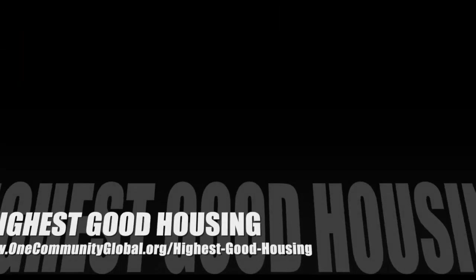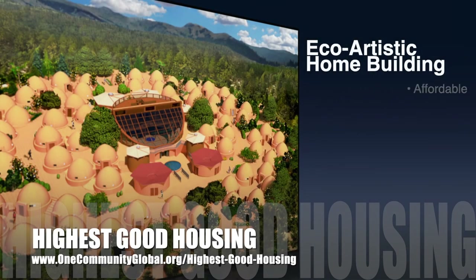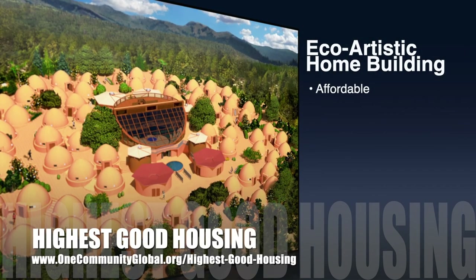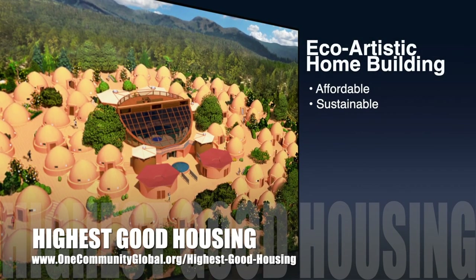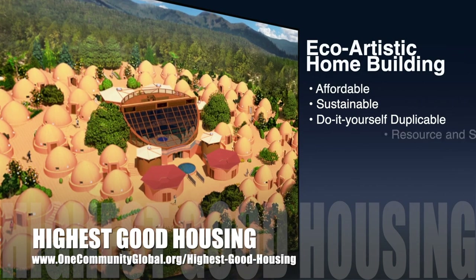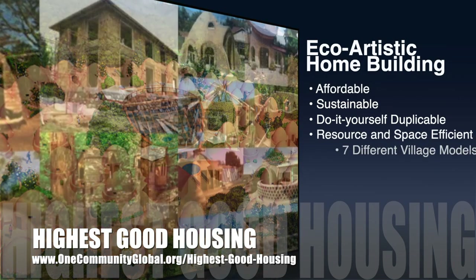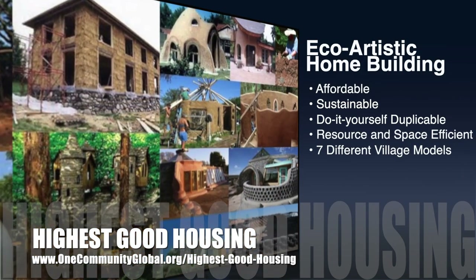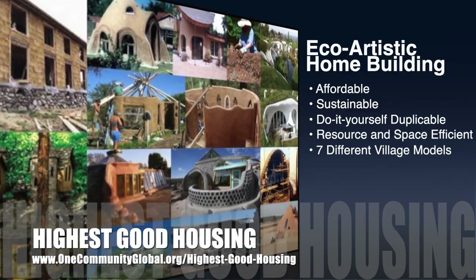The One Community approach to highest good housing is eco-artistic home building that is affordable, sustainable, do-it-yourself duplicable, resource and space efficient, and consists of seven different sustainably constructed village models.